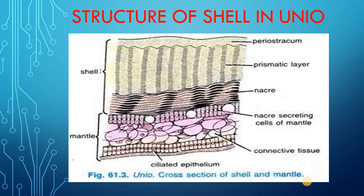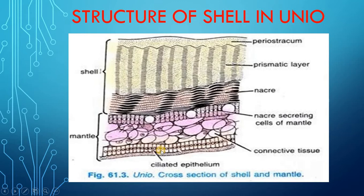Good morning students. Today we will discuss the structure of the shell in Unio (Eonube). This picture shows the cross-section of the shell and the mantle, showing three layers: periostracum, prismatic layer, and nacreous layer, as well as the nacreous-secreting cells of the mantle, connective tissues, and ciliated epithelium, which will be discussed further in upcoming slides.